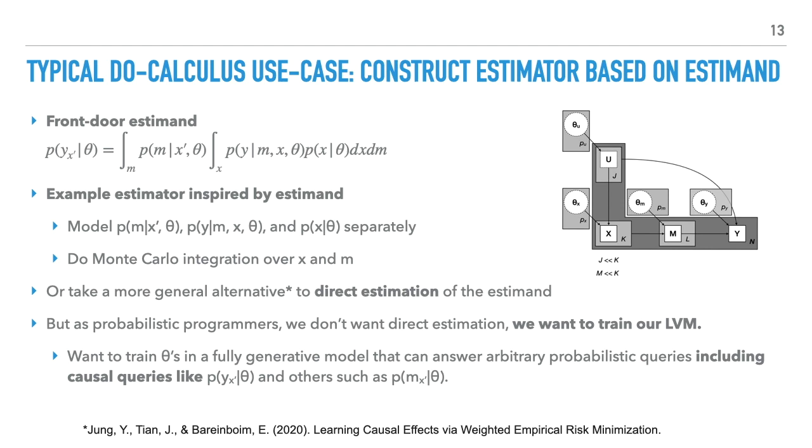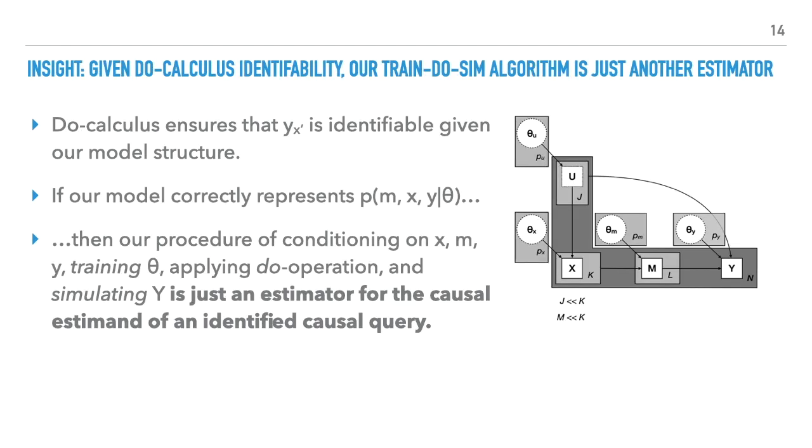But as probabilistic programmers, we don't want direct estimation. We want to train our latent variable model. I say this is indirect because we are training a fully generative model that can handle arbitrary probabilistic queries, including this particular causal query, Y sub x prime, as well as other causal queries that are identifiable by the do-calculus. For example, M sub x prime.